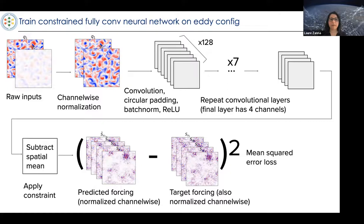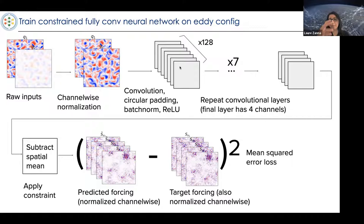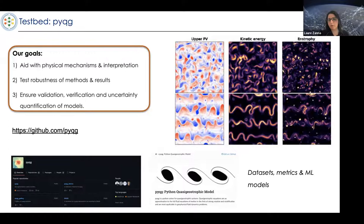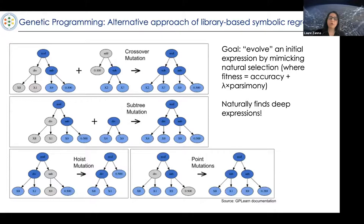The first parametrization we tried on the QG test bed was a neural network, same as before. Input is potential vorticity (PV) from the two-layer model, processed through a convolutional neural network in a doubly-periodic domain. We learn only from the eddy configuration — where there are no jets, just eddies on a beta plane. The second method is genetic programming — going back to the idea of learning a symbolic expression. Before, we pre-computed a large library of 200 functions and pruned it; now, genetic programming sets up trees in parallel with multiplications, divisions, additions, and finds the best matches based on accuracy and parsimony.